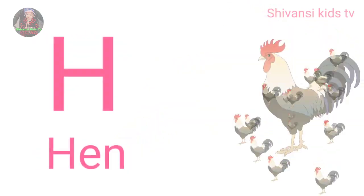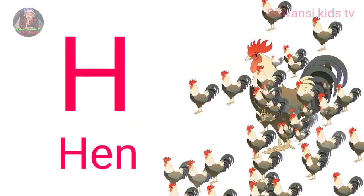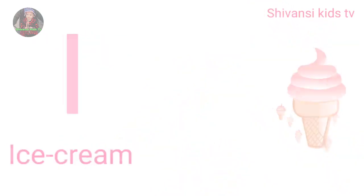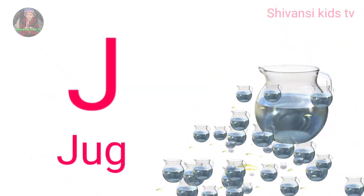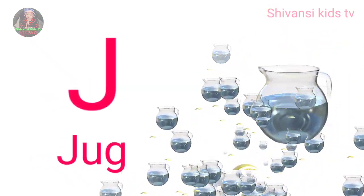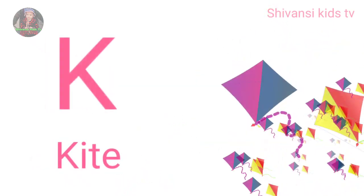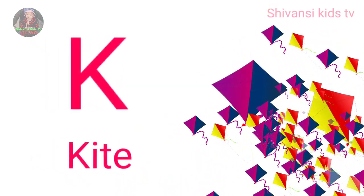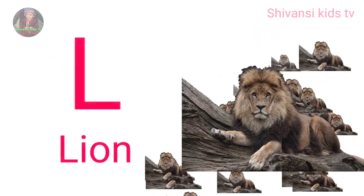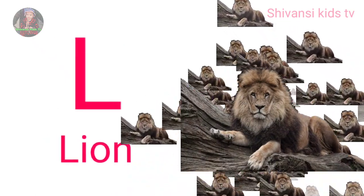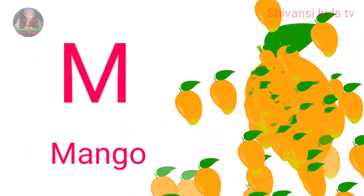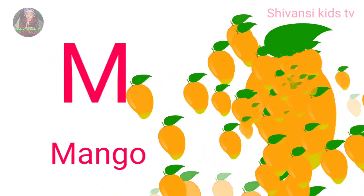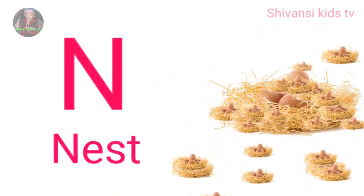H for hand, I for ice cream, J for jug, K for kite, L for lion, N for mango, N for nest.